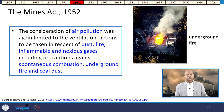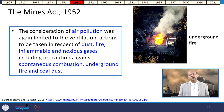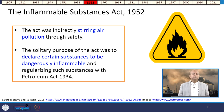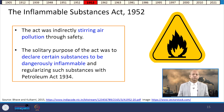The Mines Act of 1952 addressed air pollution through provisions related to ventilation, dust, fire, inflammable and noxious gases, precautions against spontaneous combustion, underground fire, and coal dust — again related to occupational hazards. Also in 1952, the Inflammable Substances Act was enacted to declare certain substances as dangerously inflammable and to regulate them under the Petroleum Act of 1934, indirectly relating to air pollution through safety issues.